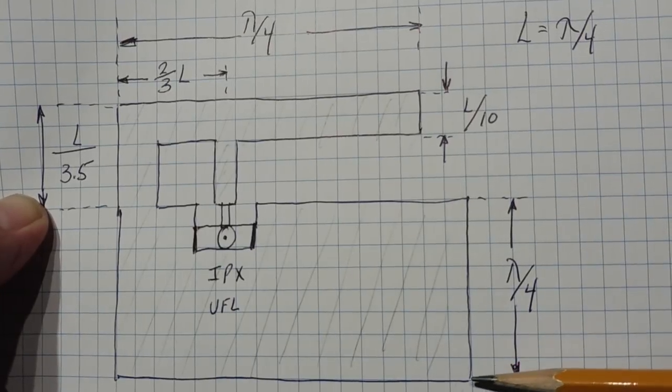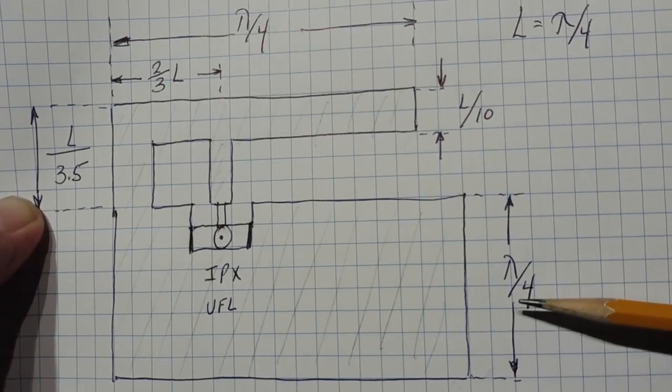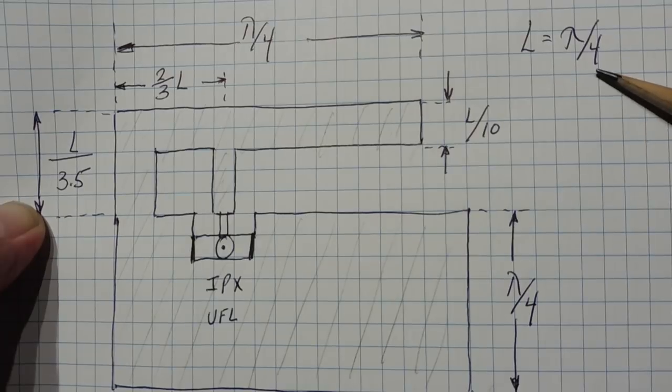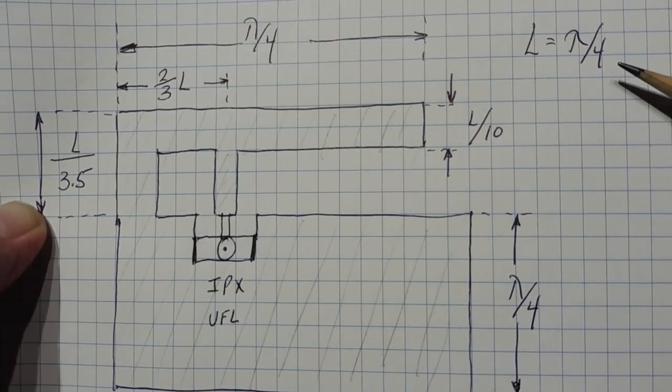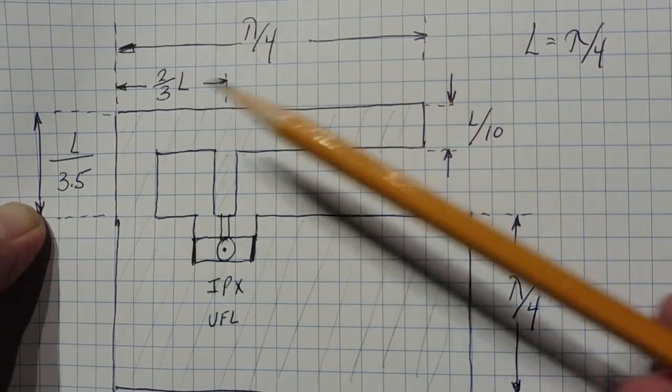And from here to here is our ground plane. So it's a quarter wave in height. And L equals a quarter wavelength at a desired operating frequency. So here's our radiator. It's a quarter wavelength long.